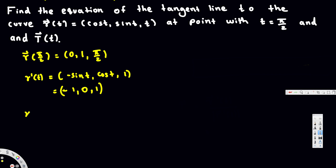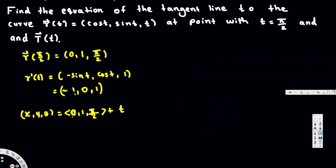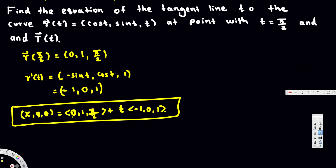Now we can write the equation of the tangent line. In vector form: ⟨x, y, z⟩ = ⟨0, 1, 5π/2⟩ + T · ⟨-1, 0, 1⟩. This is the equation of the tangent line.